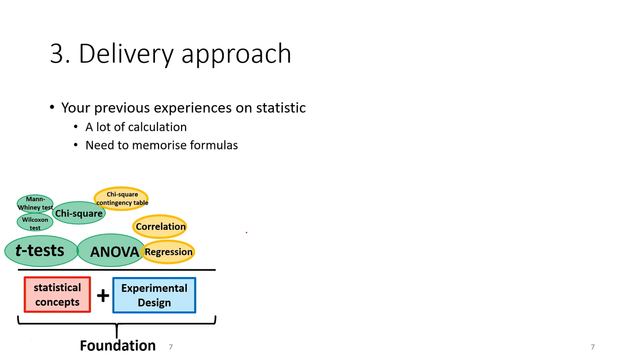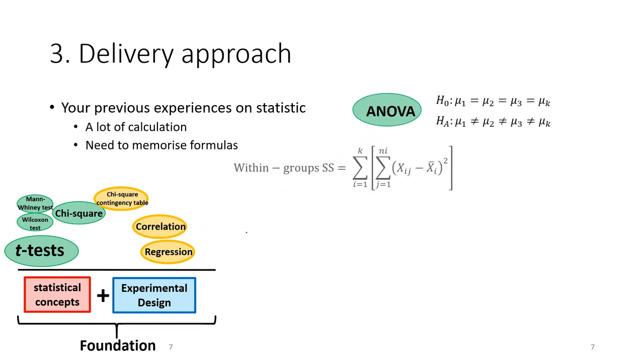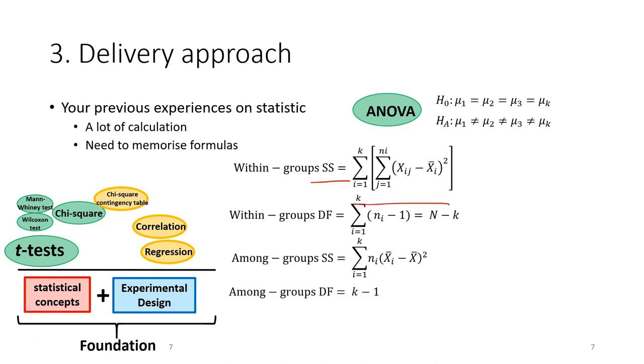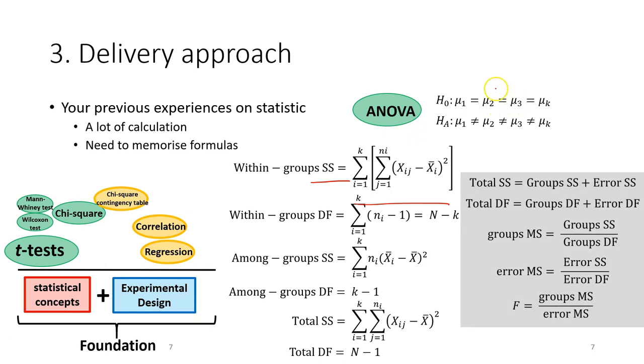In your previous experience with statistics, you might realize there will be a lot of calculations and sometimes you'll be asked to memorize formulas. For example, for the one-way ANOVA test, you have a hypothesis then you need to do many different calculations. In this case, you have to calculate the sum of squares using this formula and also calculate the degree of freedom, calculate the among group sum of squares, and so on. As you can see, this is just for one analysis.